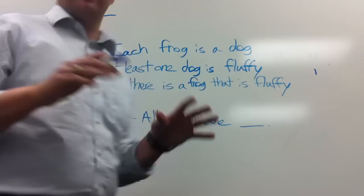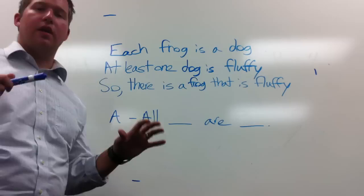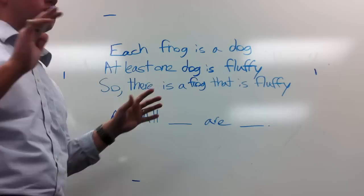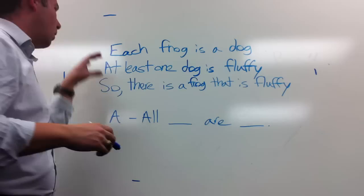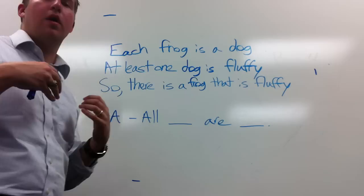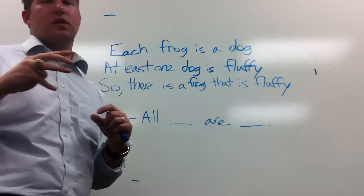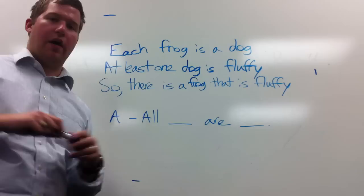This video is about putting categorical statements into standard form. There are two things we have to do to put categorical statements and categorical syllogisms into standard form. The first thing is to make sure every single one of our statements is in its correct form — I call it primary form, or basic form, whatever you want to call it. The notes at the bottom of chapter 5, section 1 are the best place to reference this.